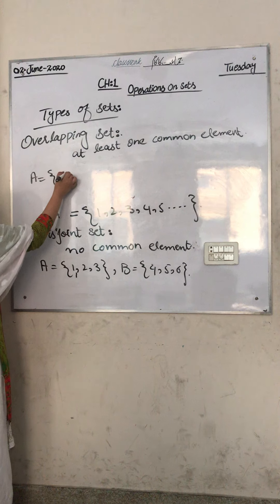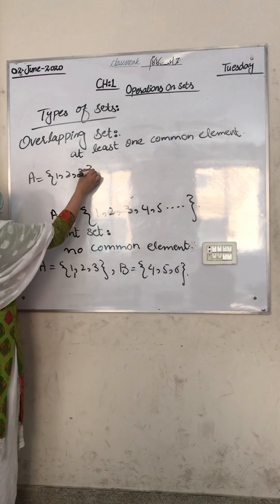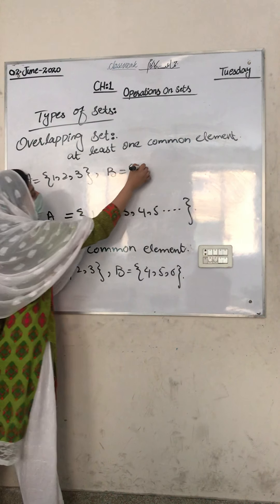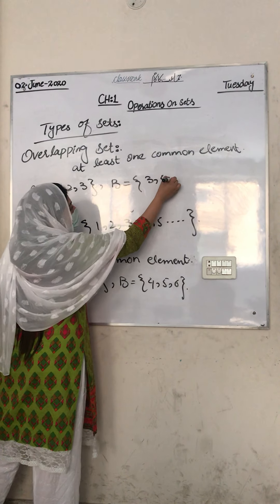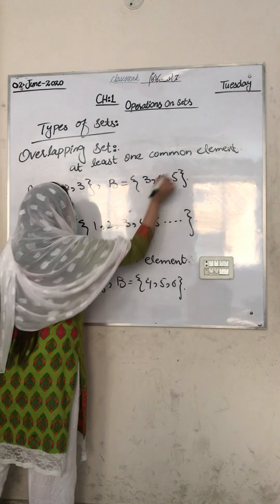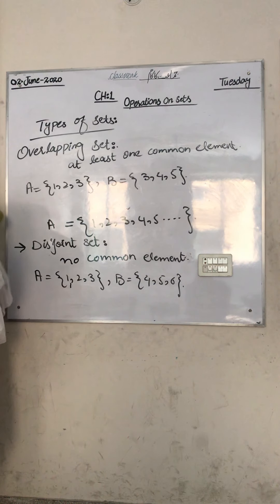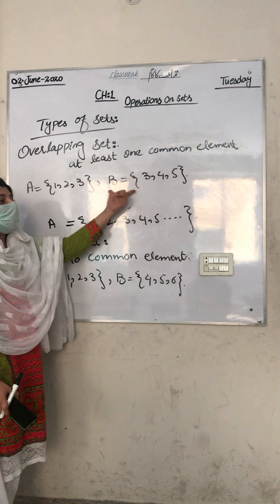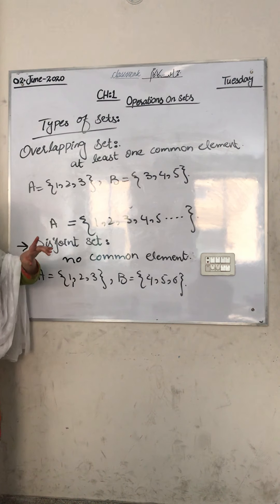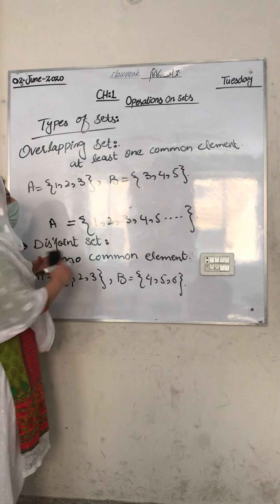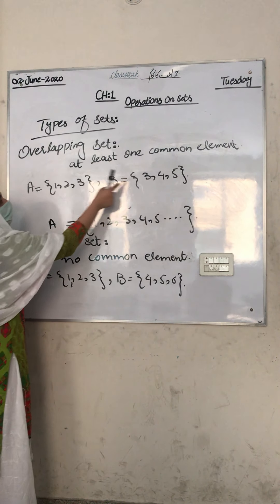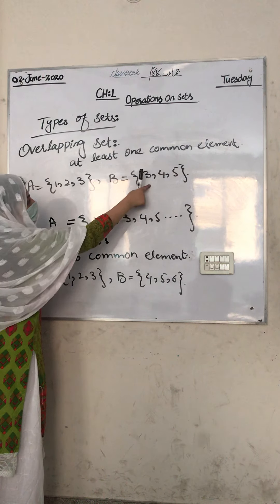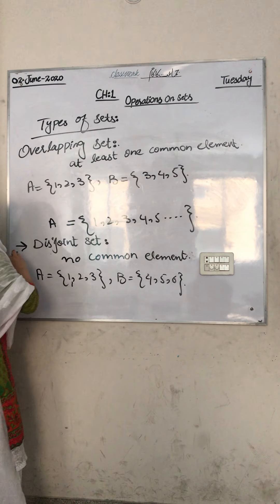For example, A = {1, 2, 3} and B = {3, 4, 5}. Here 3 is a common element. So this is an overlapping set. Clear?